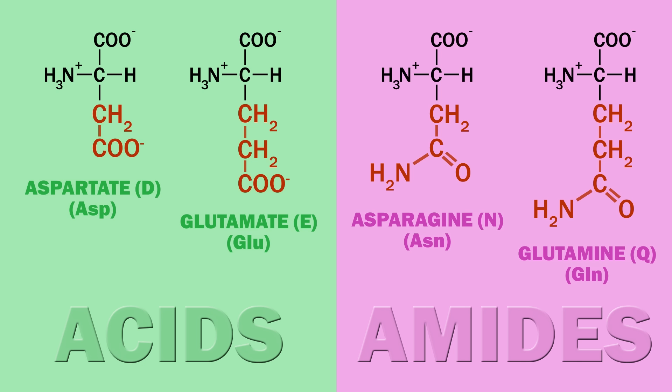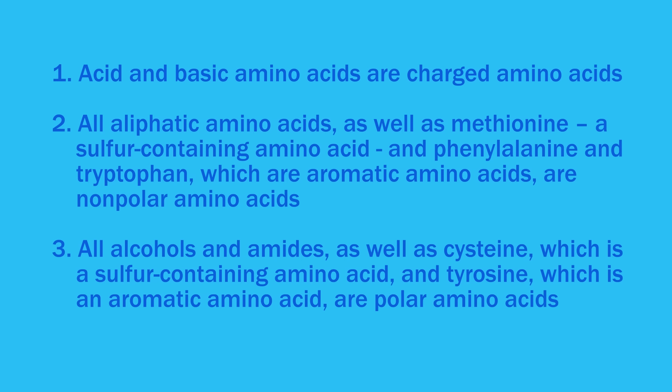A cool pattern between acid and amide amino acids: aspartate and asparagine both have two carbons in their R groups, while glutamate and glutamine both have three carbons in their R groups. Acid and basic amino acids are charged. All aliphatic amino acids, as well as methionine and phenylalanine and tryptophan, are nonpolar. All alcohol amino acids and amide amino acids, as well as cysteine and tyrosine, are polar.